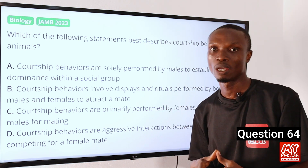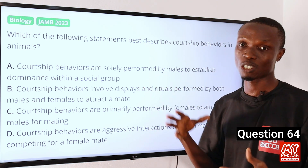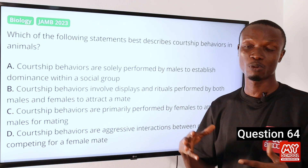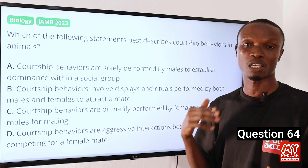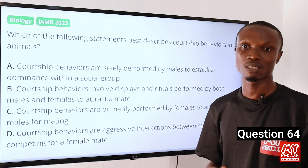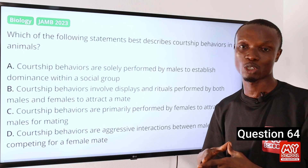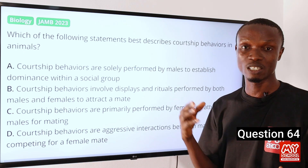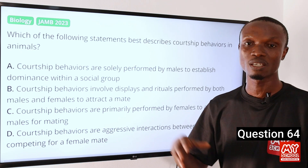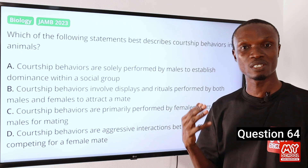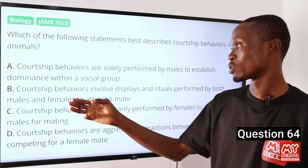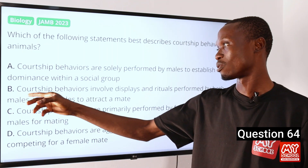Courtship behavior in animals plays crucial roles in mate selection and reproductive success in many animal species. It involves a series of dances, rituals, vocalizations, and displays, or other behaviors which serve to communicate sexual receptivity, readiness, and attractiveness. So that makes option B the correct option.